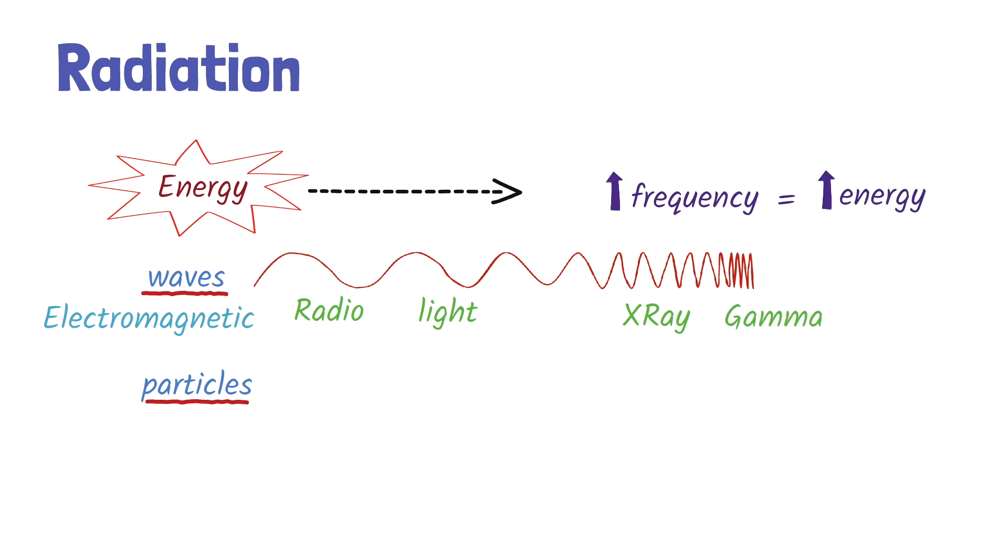Particle radiation, on the other hand, involves actual matter, such as alpha and beta particles.